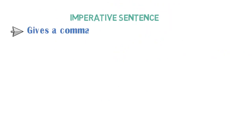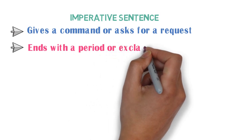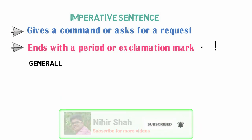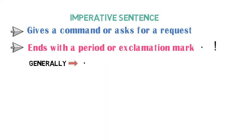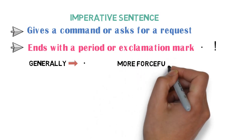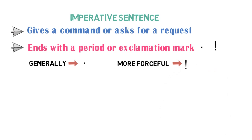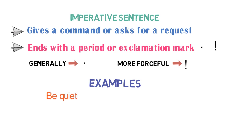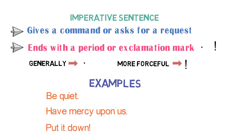Now let's look into the third type of sentence: the imperative sentence. An imperative sentence gives a command or asks for a request. It ends with a period or exclamation mark depending on how forcefully the sentence is said. Generally, we use a full stop or period, but if the sentence is said more forcefully, we use an exclamation mark as well. Examples include: 'Be quiet.', 'Have mercy upon us.', and 'Put it down!' Notice that as the third sentence is said forcefully, an exclamation mark is used.